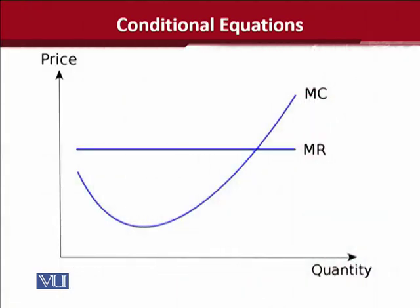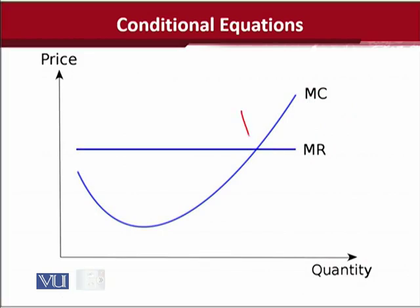In this diagram, you can observe that at this point this conditional equation is applicable. The equality of MC and MR is diagrammatically achieved at this point, but we can also write it using this equation. We can explain the whole phenomenon without making this diagram — it is quite concise, and this is the gist of mathematical economics, that it puts things in a very concise way.